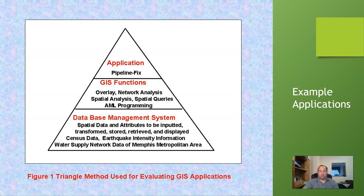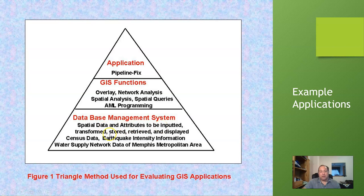To give you another way to look at the modeling approach: say I need to fix a pipeline. The GIS functions I'll need include overlay, network analysis, spatial analysis, spatial queries, and AML programming. The database management requires spatial data and attributes to be inputted, transformed, stored, retrieved, and displayed. I'll need census data, earthquake intensity information, and water supply network data for the metropolitan area — all to do this one pipeline fix in Memphis.